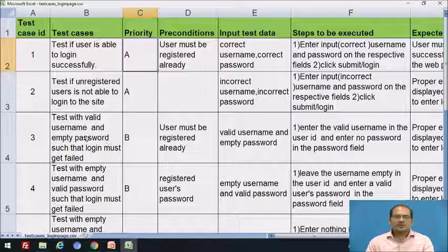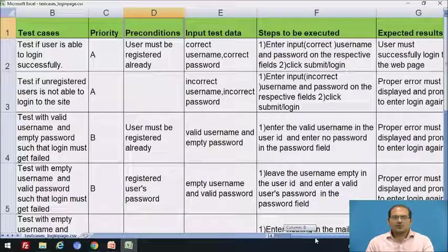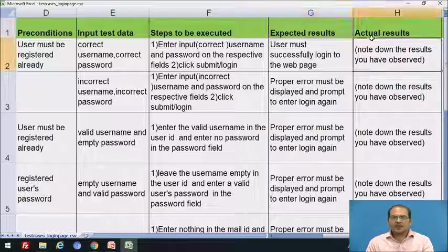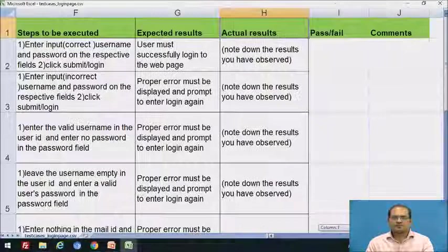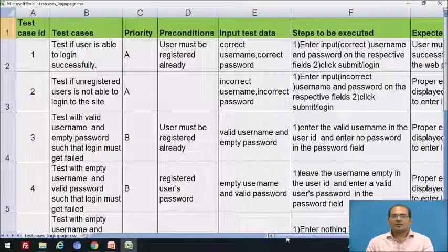The test case should have the following fields: test case ID, test case description, priority based on importance, preconditions, input/test data — the data provided for test case execution, steps for execution, expected result, actual result, pass or fail status, and any remarks or comments. These are the basic fields required for writing test cases.